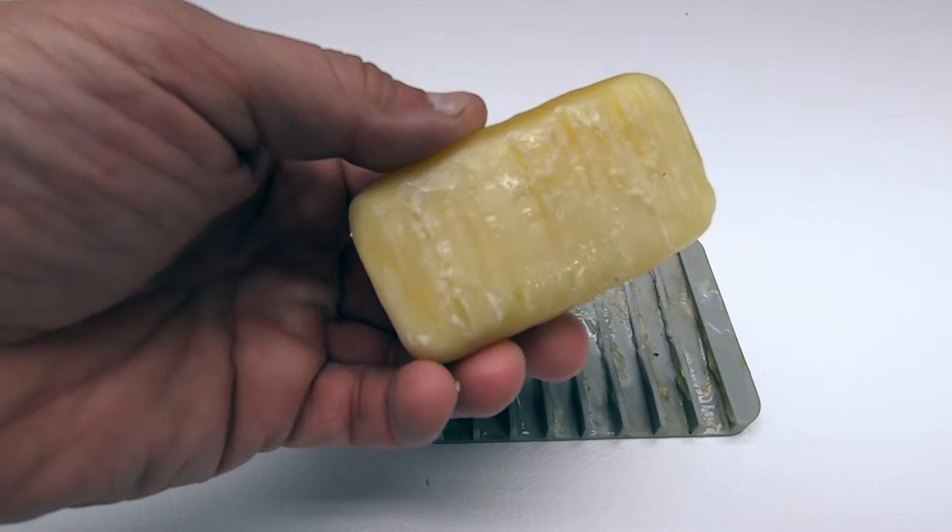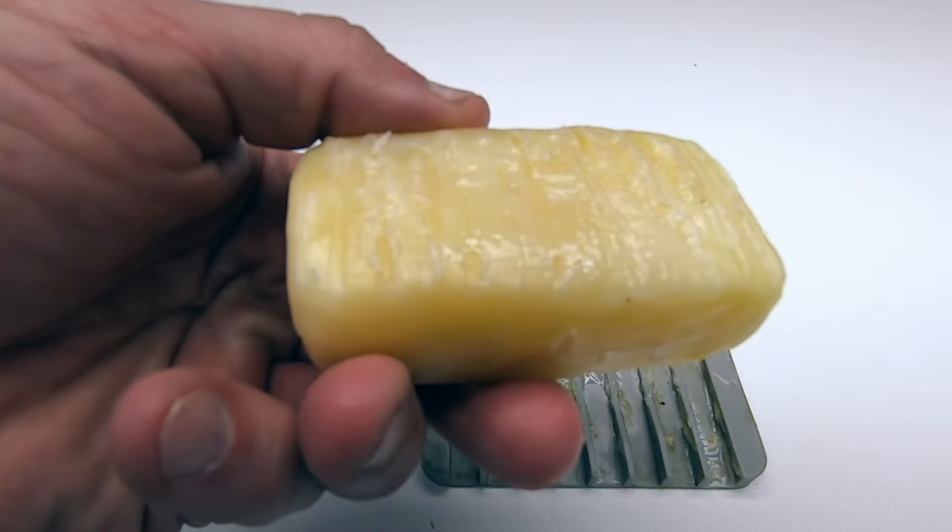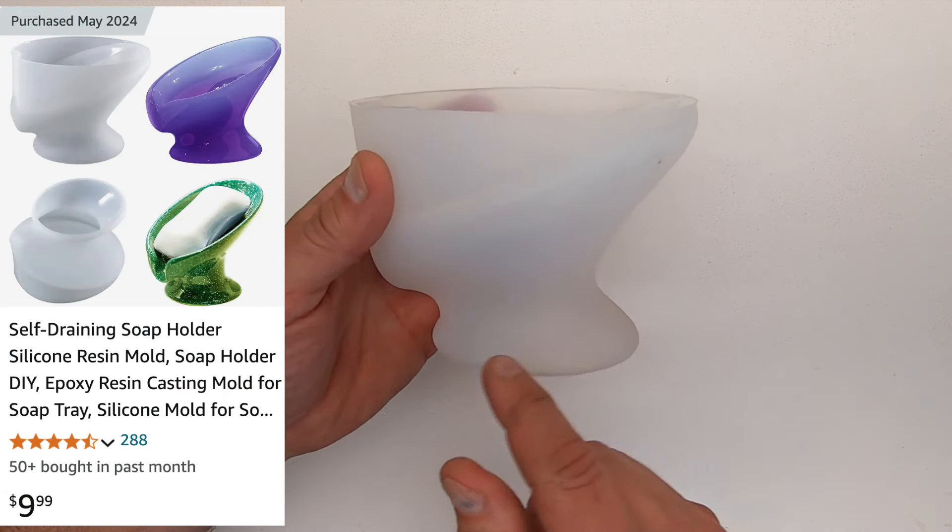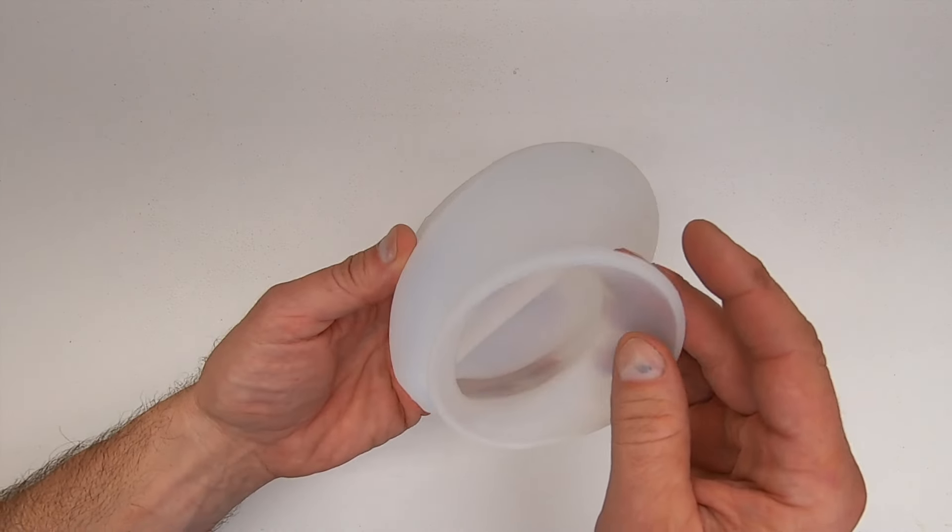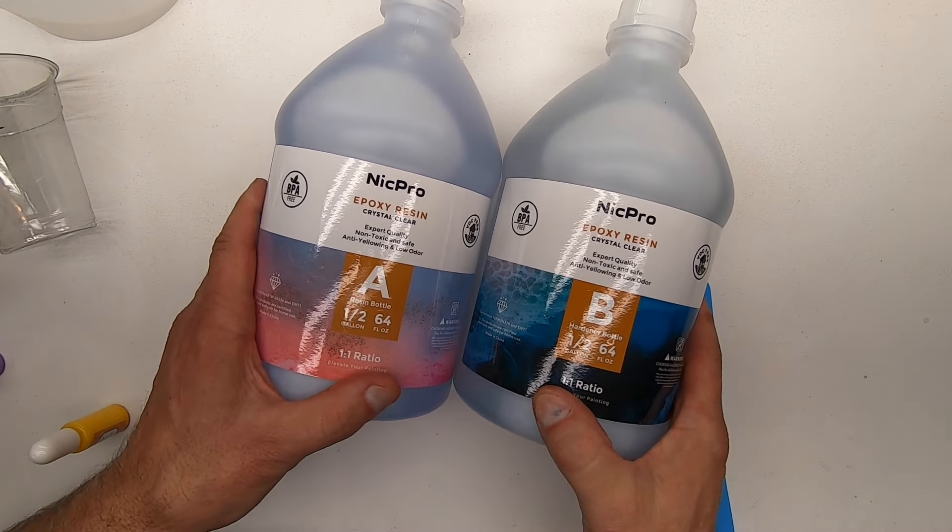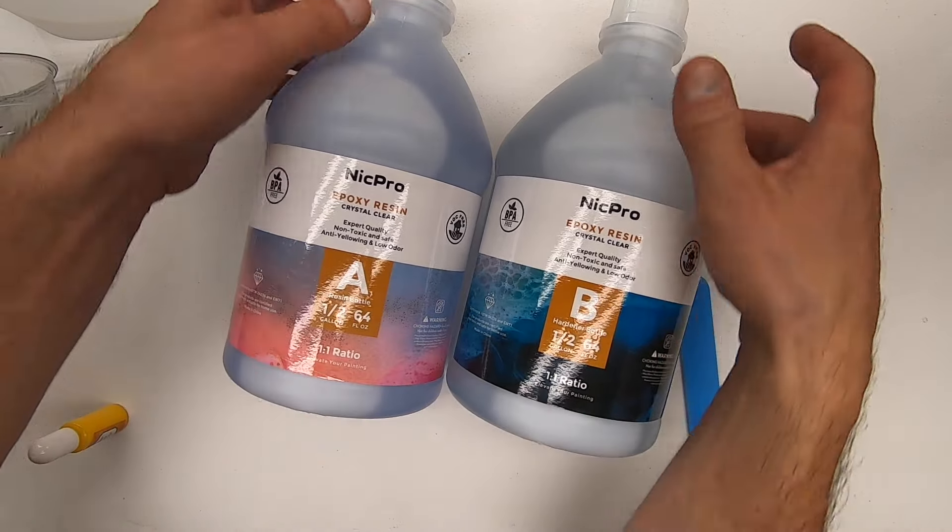As I was Googling soap dishes, I came across this silicone mold for $10. This looks like it just might solve my problem and it'll be a fun DIY epoxy project as well.